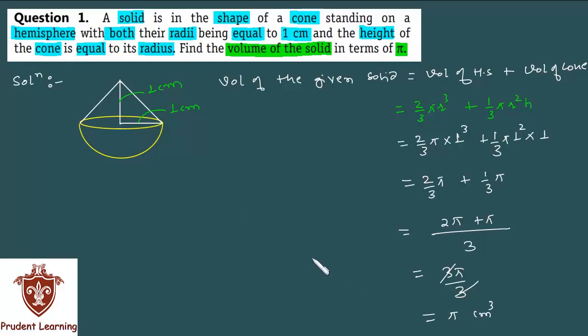Because all measurements were given in centimeters. So therefore we have volume of the given solid as π cm³. This completes our solution, let us see the next question.